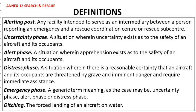Key definitions: An alerting post is any facility intended to serve as an intermediary between a person reporting an emergency and a rescue coordination center or rescue sub-center. Uncertainty phase is a situation where uncertainty exists as to the safety of an aircraft and its occupants. Alert phase is a situation wherein apprehension exists as to the safety of an aircraft and its occupants. Distress phase is the situation wherein there is a reasonable certainty that an aircraft and its occupants are threatened by grave and imminent danger and need immediate assistance. Emergency phase is a generic term meaning uncertainty phase, alert phase, or distress phase.